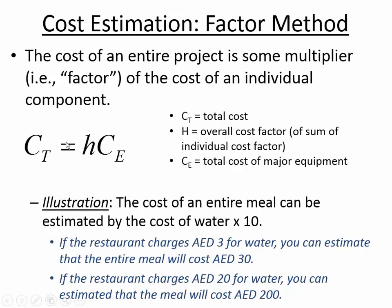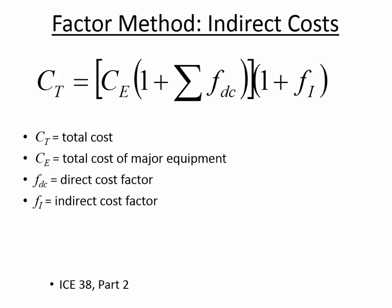The formula says total cost can be estimated by a cost factor H multiplied by C sub E, the cost of a major component. Here H is 10 — the idea that the meal costs about 10 times the price of water. We can also include indirect costs. Remember direct costs versus indirect costs: indirect costs are the things difficult to attribute exactly — accounting, supervisory services, electricity, rent — things where it's tough to say exactly how much goes into a certain item.